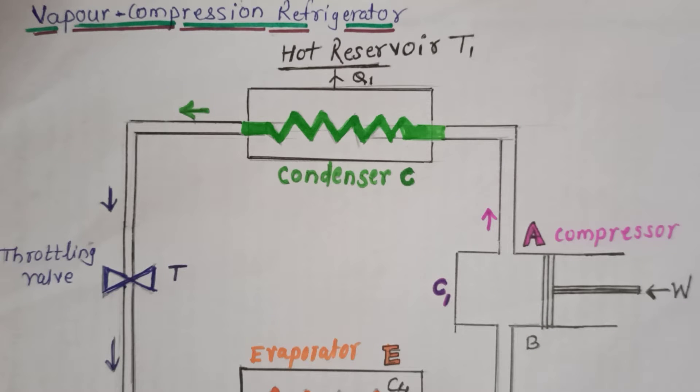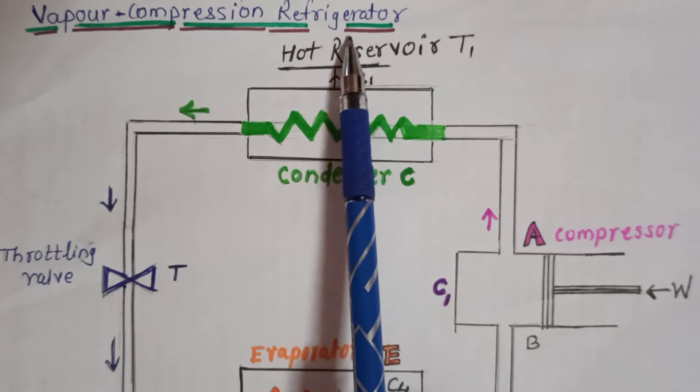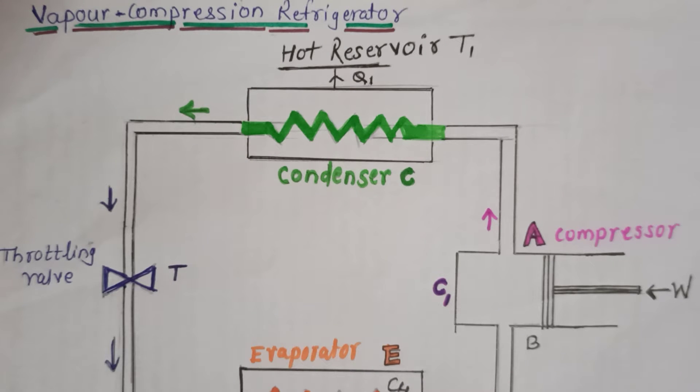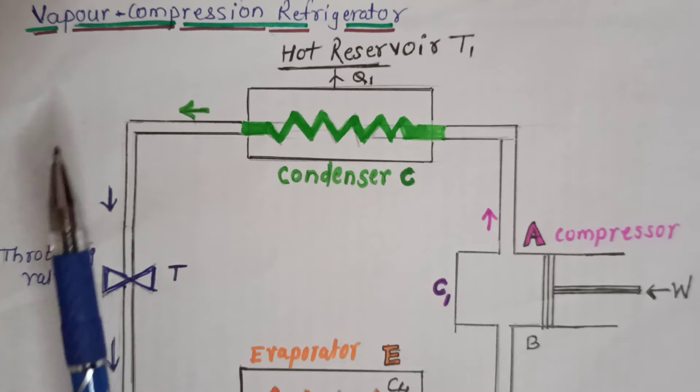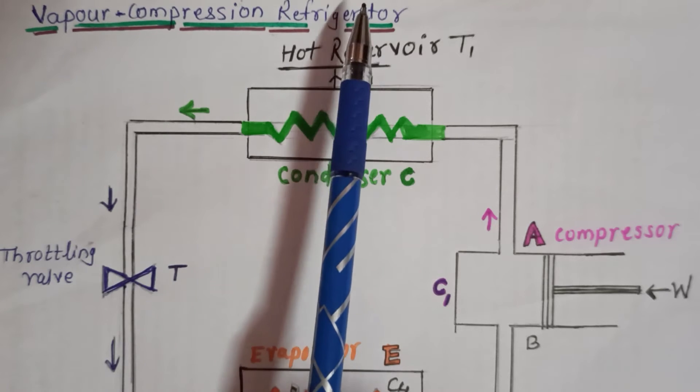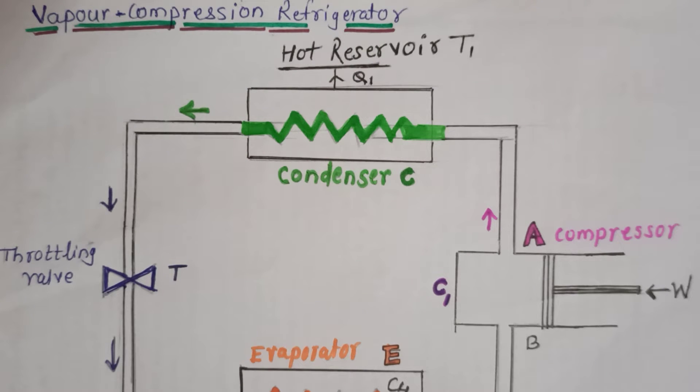Vapor compression refrigerator. Simple structure of vapor compression refrigerator. Commercial refrigeration plants and most electric refrigerators belong to this class. Construction and working of vapor compression refrigerator. Most electrical refrigerators belonging to this class, that is domestic refrigerators.